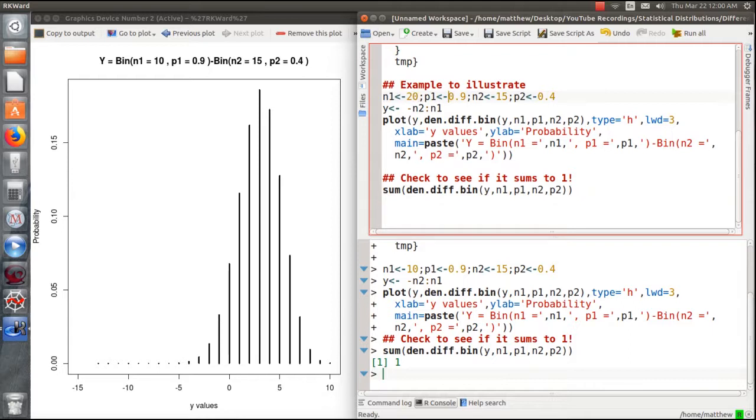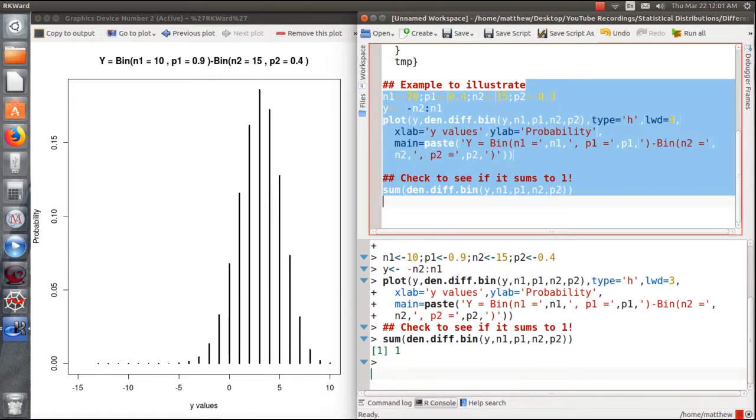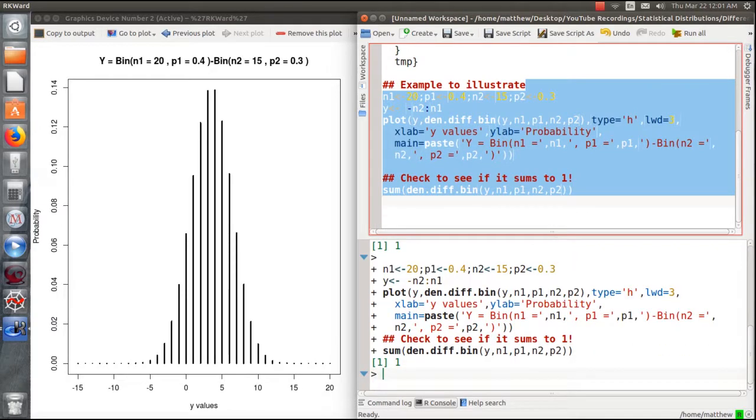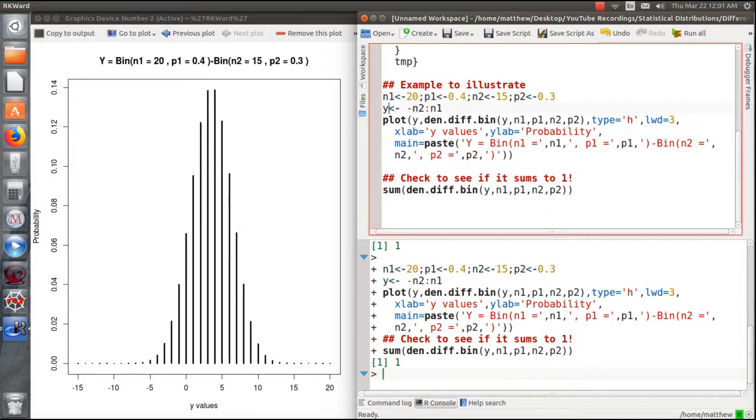And now let's just have a little fun here. So let's make this 20 and 0.4 and we'll keep it 15 and 0.3. So then we plot this and that is it. And they all sum to one.